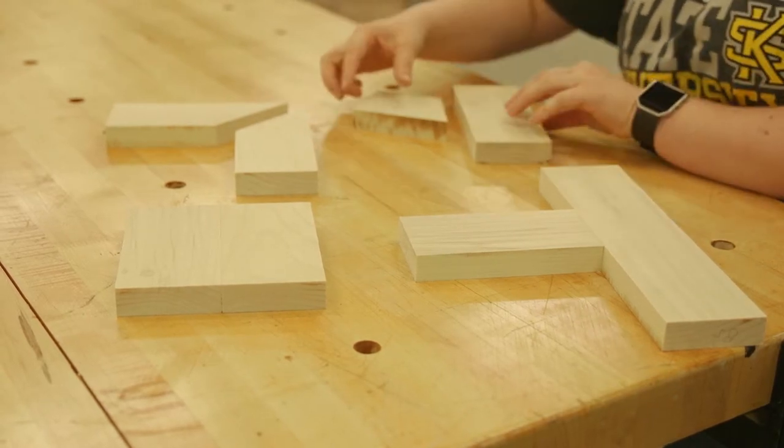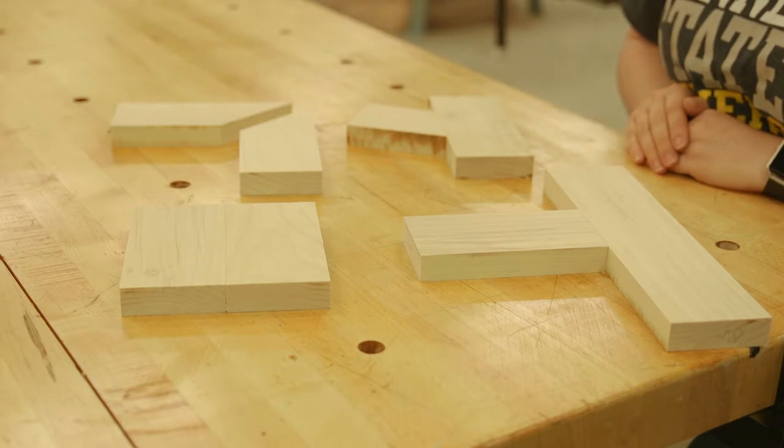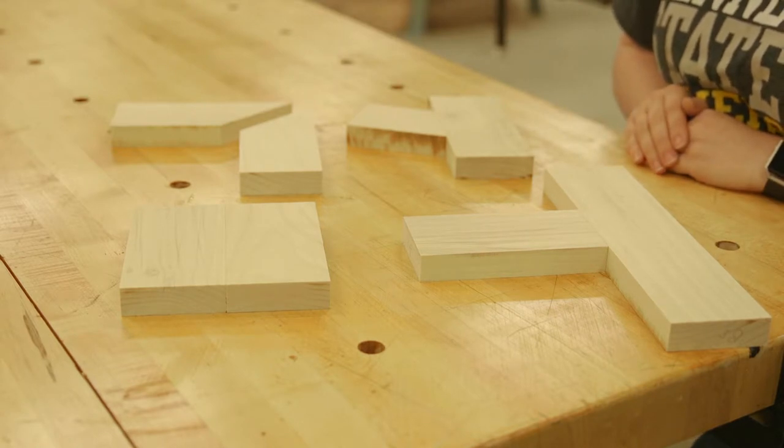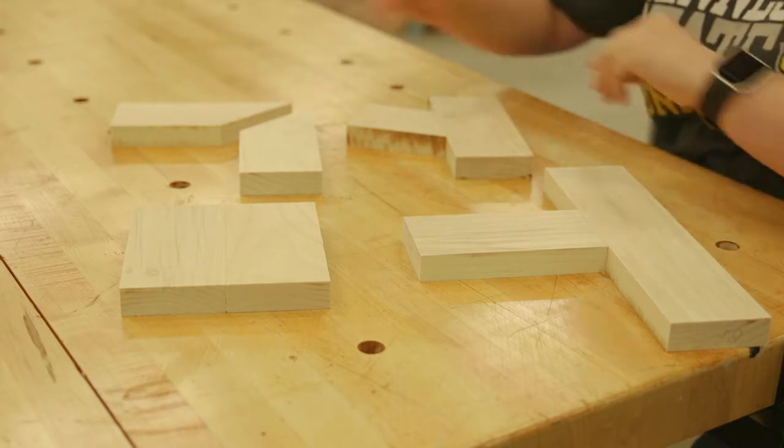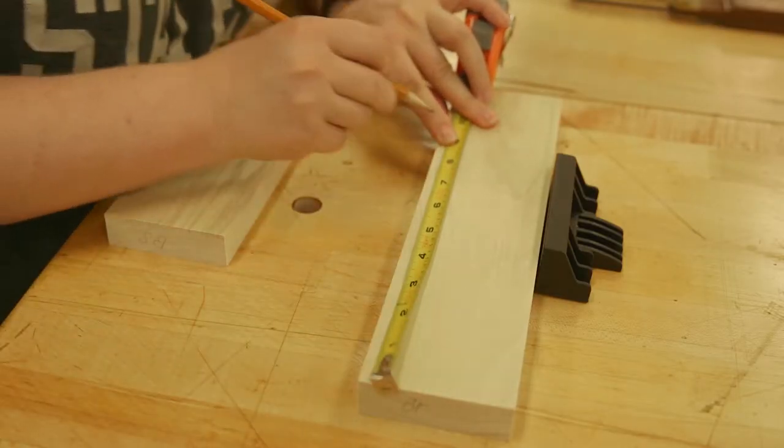The common steps for the joint making process are the following: joint selection, and we assume you selected or are at least considering the butt joint, then layout, followed by measuring and marking,